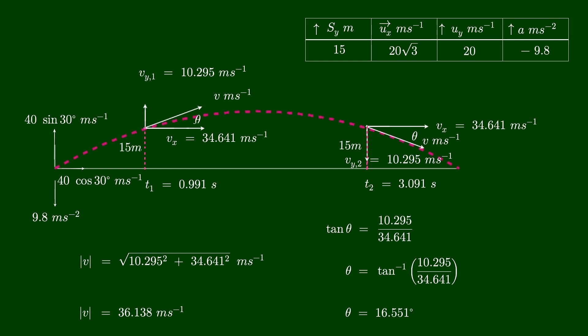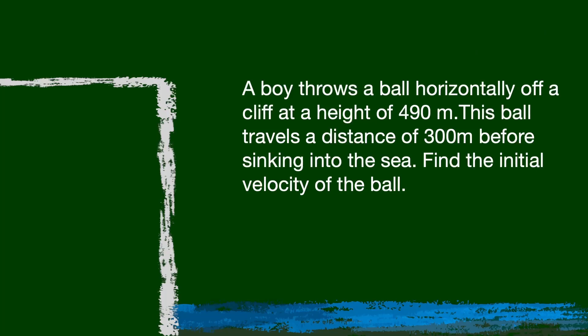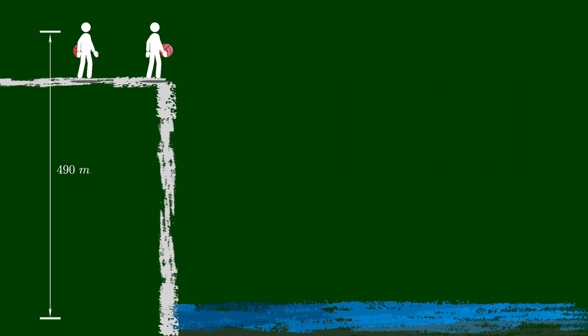Let's go on to the next question. The following question is very similar to the one we just finished. However, the projectile takes off from a high position. A boy throws a ball horizontally off a cliff at a height of 490 meters. This ball travels a distance of 300 meters before dropping into the water. Find the initial velocity of the ball. Before we get to the question, let's make a sketch to understand the trajectory of the ball.